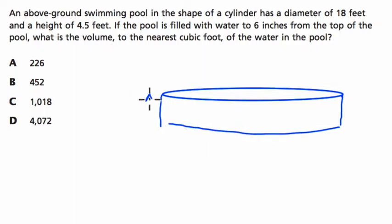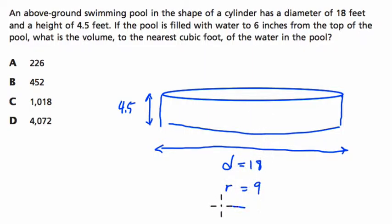Not to scale, but the height is 4.5 feet. The diameter is 18, so all the way across is 18 feet. D equals 18. The radius, half of that, R equals 9 feet. So this is half of the diameter from the center to the edge.